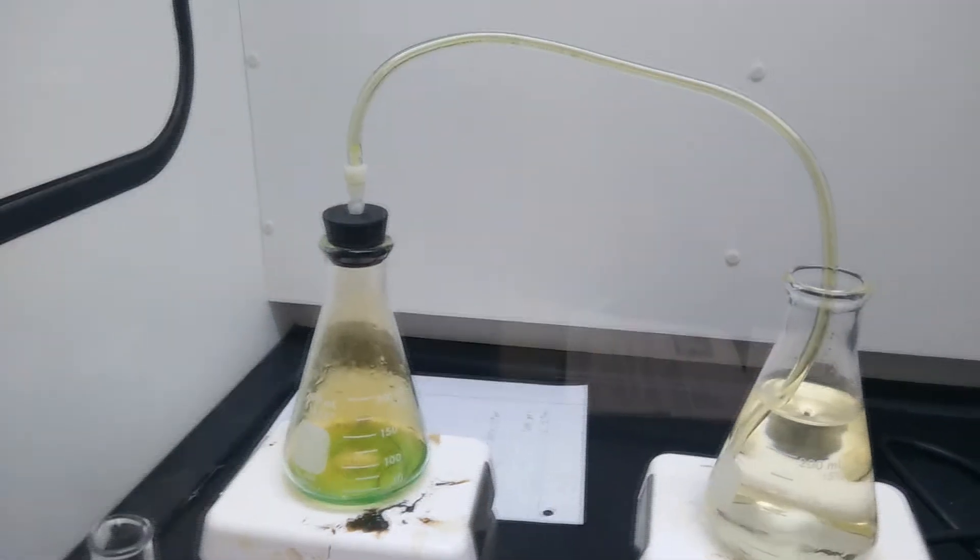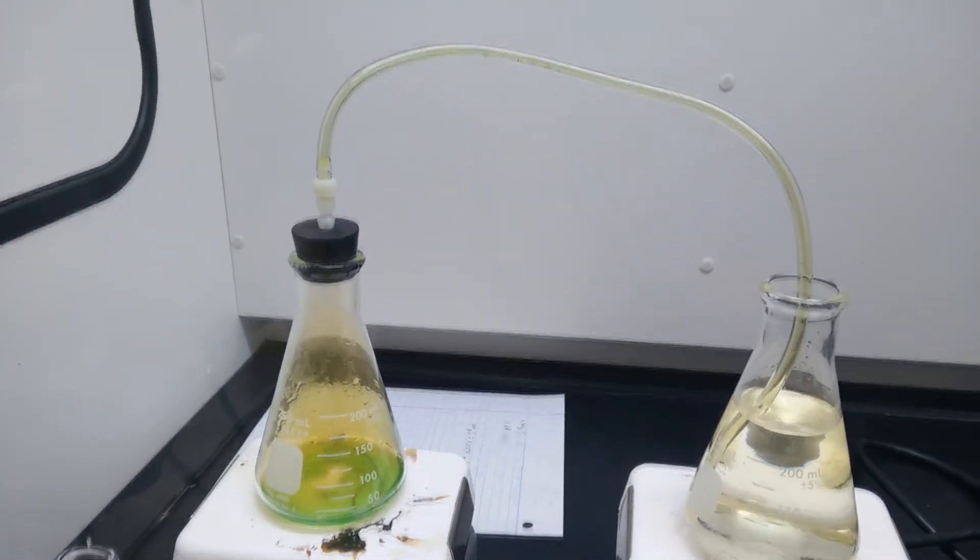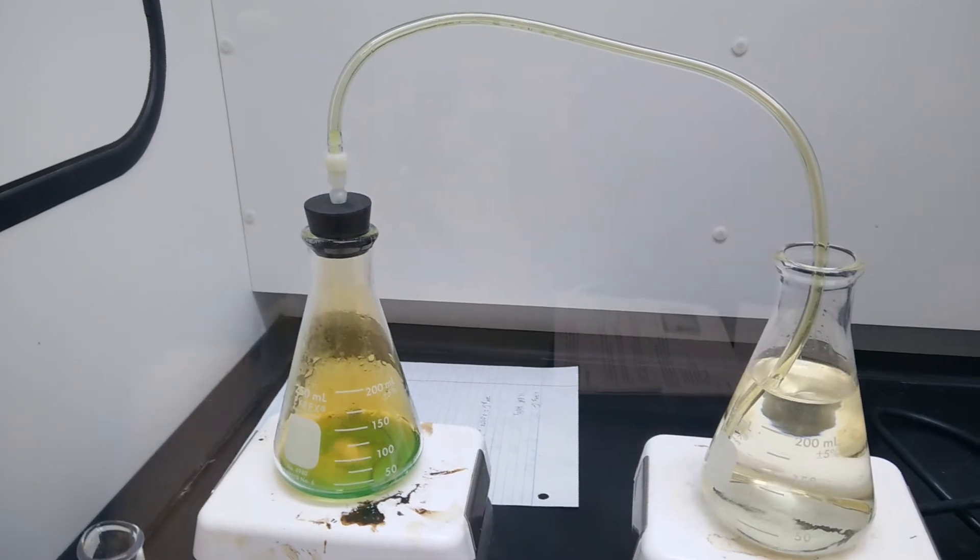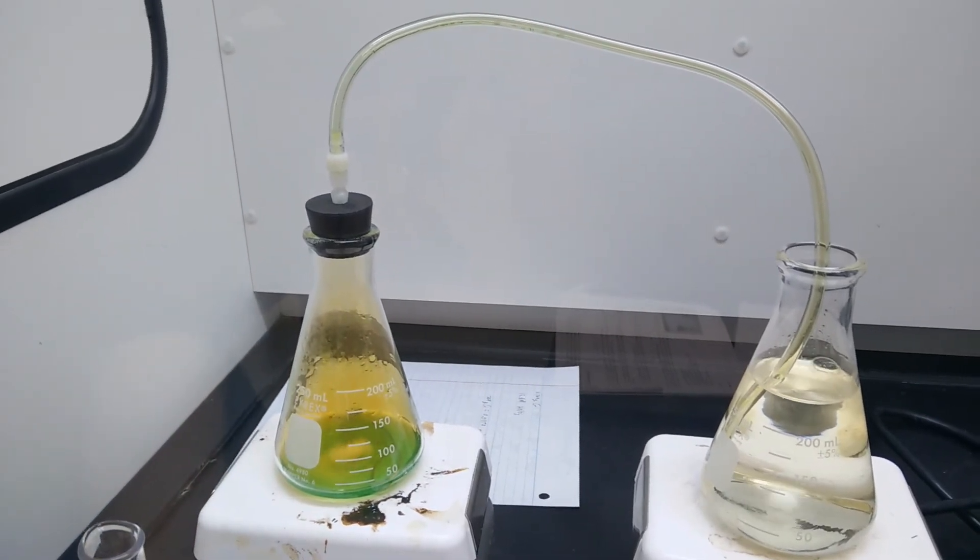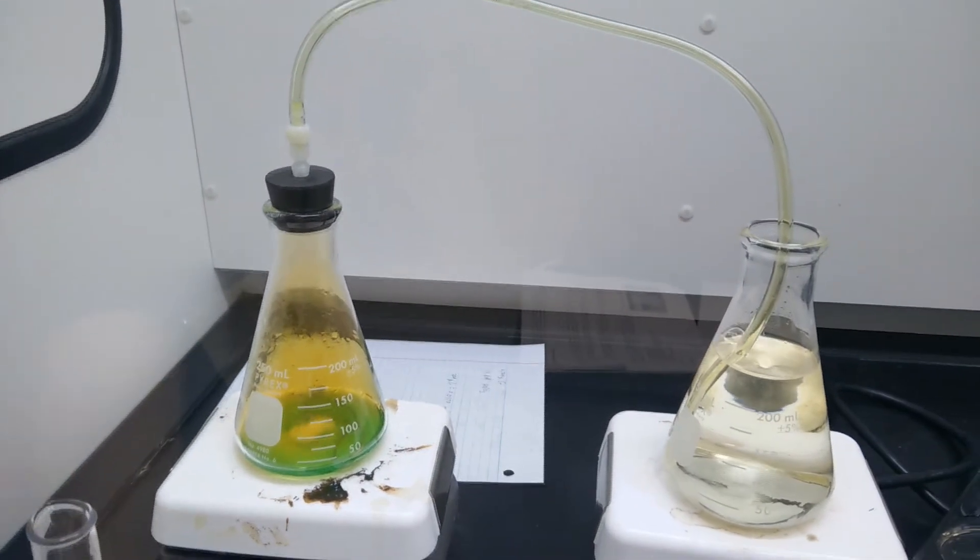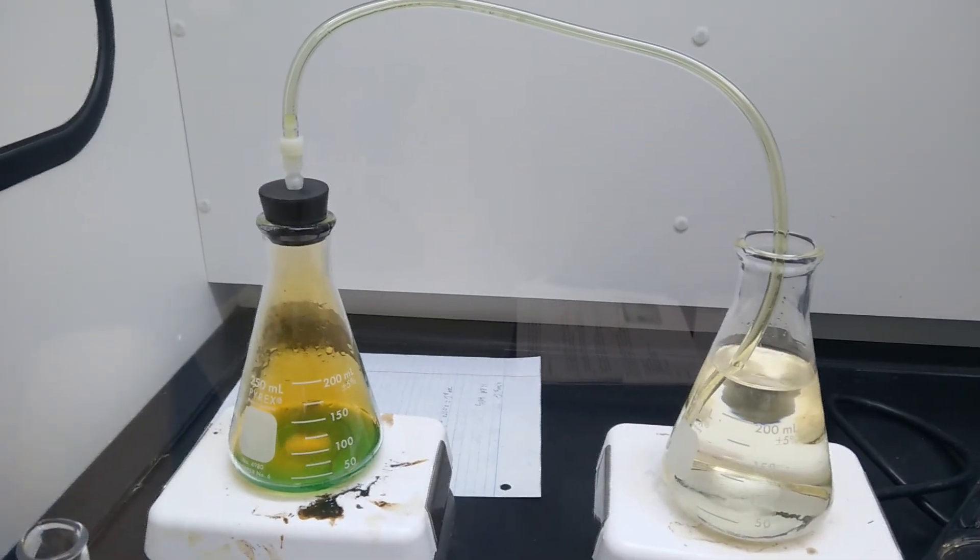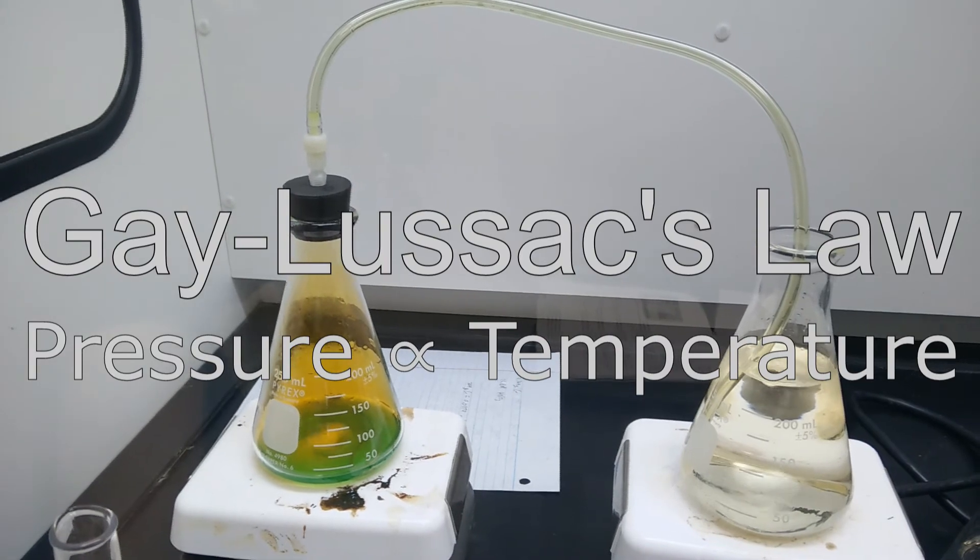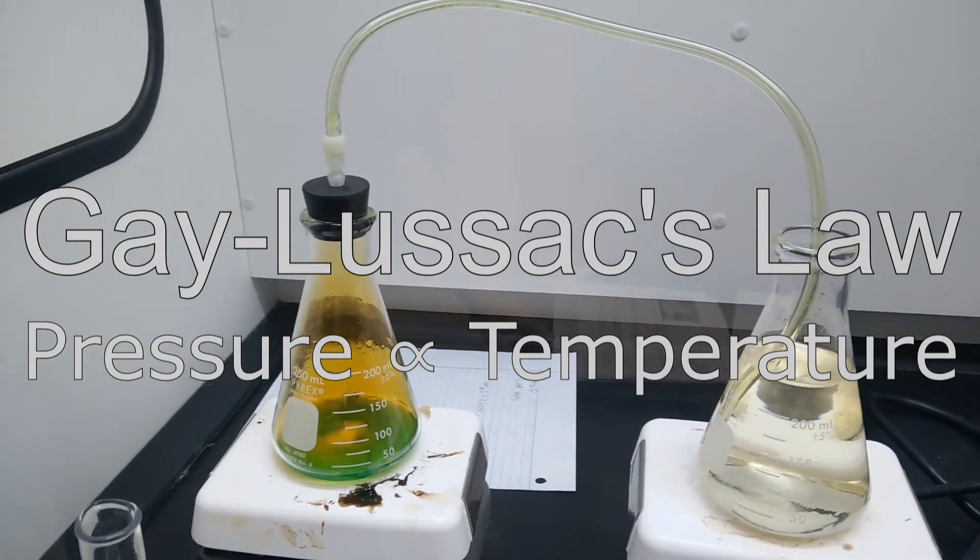In the reaction, the copper wire and nitric acid react to form a reddish brown nitrogen dioxide gas, green aqueous copper nitrate, and water. Since the enthalpy change of this reaction is also negative, it must be exothermic. This causes the pressure of the gases in the sealed Erlenmeyer flask to increase by Gay-Lussac's law, forcing the evolved gas through the tubing and into the second Erlenmeyer flask.